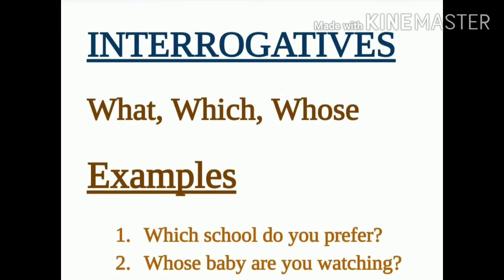Next is interrogative determiners. There are three interrogative determiners in English grammar: what, which, and whose. They are used to frame a question and are always followed by the noun. For example: 'Which school do you prefer?' — here 'which' is the determiner. 'Whose baby are you watching?' — 'whose' is an example of an interrogative determiner.